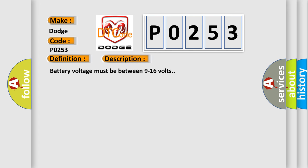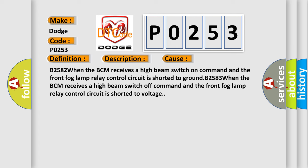Battery voltage must be between 9 to 16 volts. This diagnostic error occurs most often in these cases: B2582, when the BCM receives a high beam switch-on command and the front fog lamp relay control circuit is shorted to voltage.